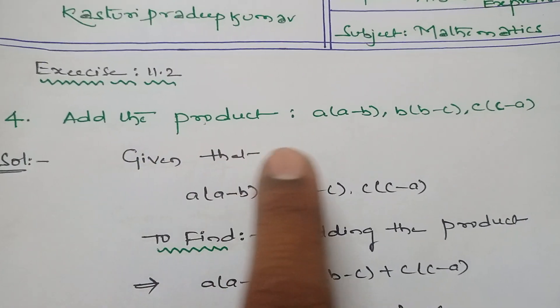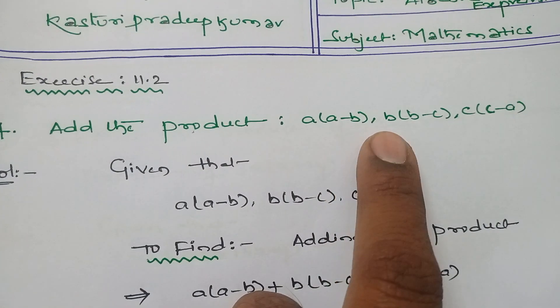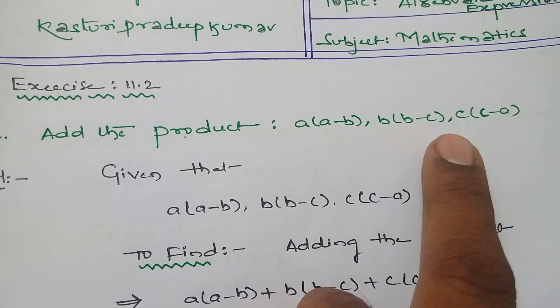Fourth sum: Add the product a(a-b), b(b-c), c(c-a).